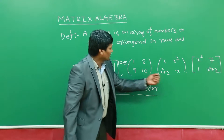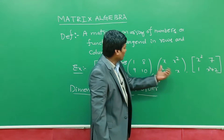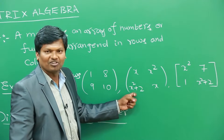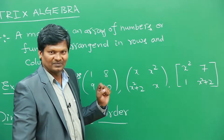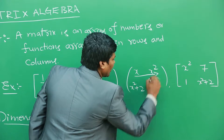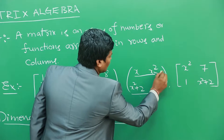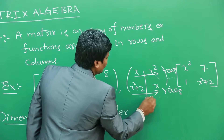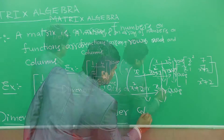Let us look at one more example. Here we have functions x, x squared, x squared plus 2, and x. These horizontal lines are rows, and we call these vertical lines columns.